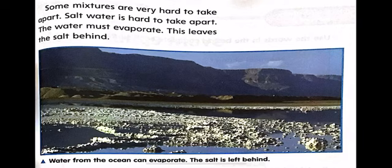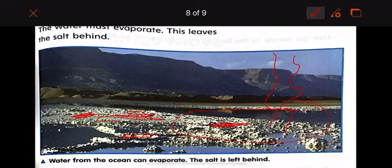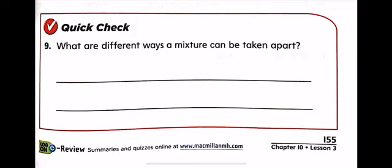Okay? So some mixtures are very hard. Are very hard to take apart or to separate. So ocean has salt water. Right? So salt water is hard to take apart. So the water must evaporate. Water must evaporate. This leaves the what? Look at this picture. These are all salt. So when the water from the ocean evaporates, the salt is left behind. Okay?